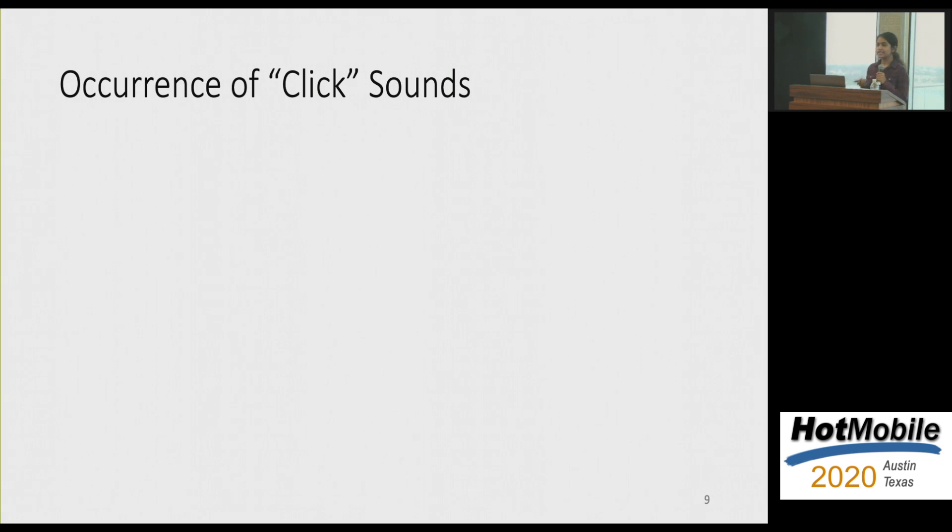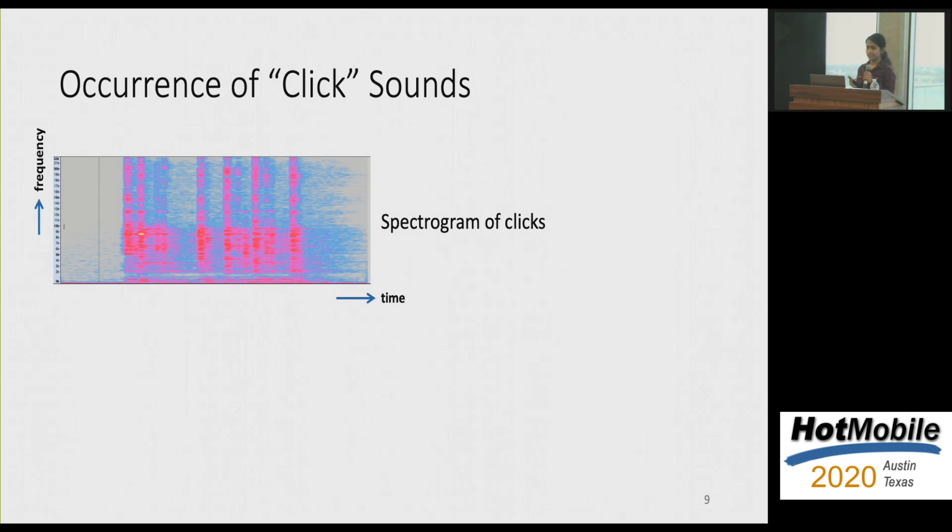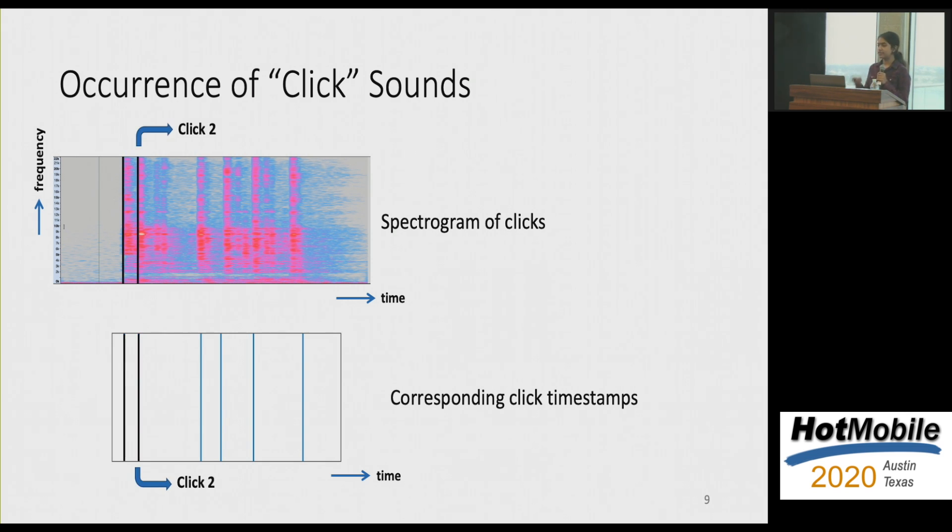So in order to show you that these clicks are in fact real and they form the majority of the sound produced during key insertion, I show a real spectrogram of a key insertion here. So a spectrogram basically shows you energies of different frequencies as it changes with time. So the bottom plot here tells you what is the ground truth of expected click timestamps for a particular key insertion. And you can kind of see that there is a correspondence between the onset of clicks that you see in the spectrogram with that of the expected ground truth.